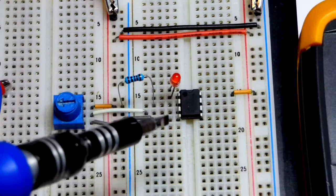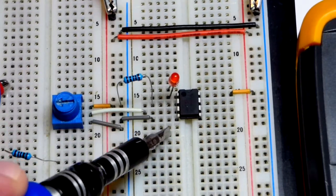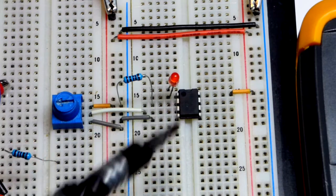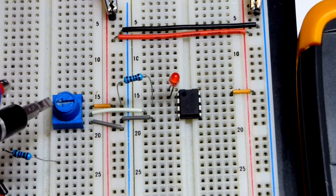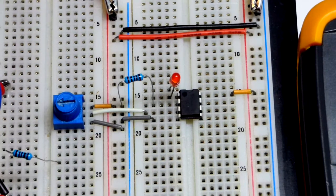In this video we're going to look at the op-amp wired as a current source. We're using the LM358 to set a current.